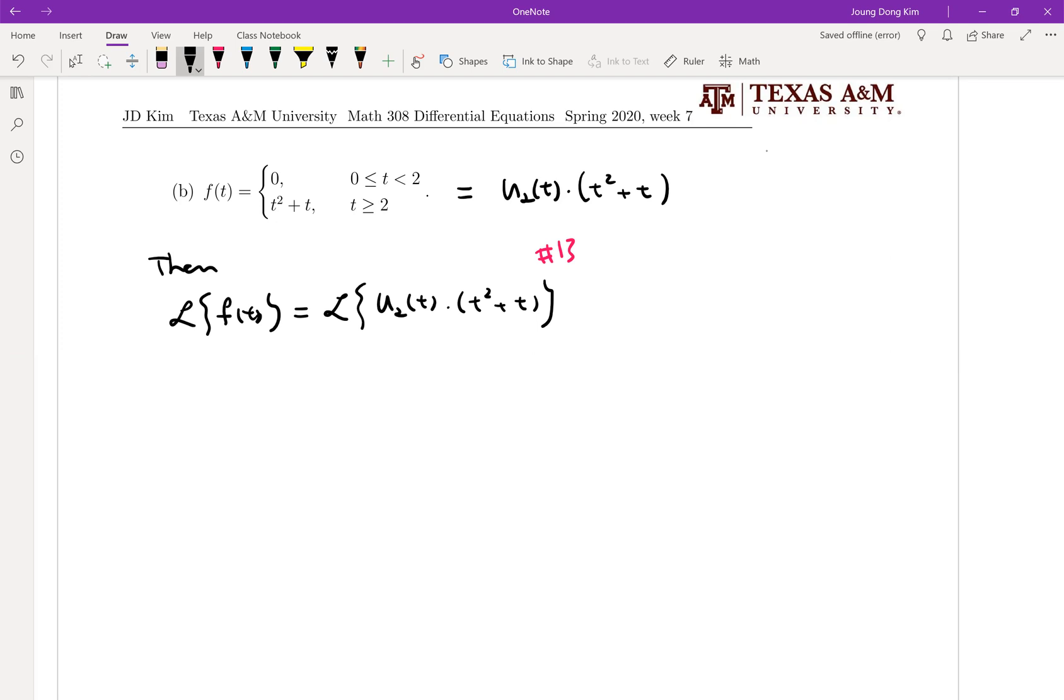It is equal to e to the minus 2s times G of s, where G of s equals Laplace transform of g of t. Let me use a different notation - in the previous one I didn't do that, but let's say g of s. This is g of t minus 2. In the previous problem I used f, but it's duplicated. It must be g.